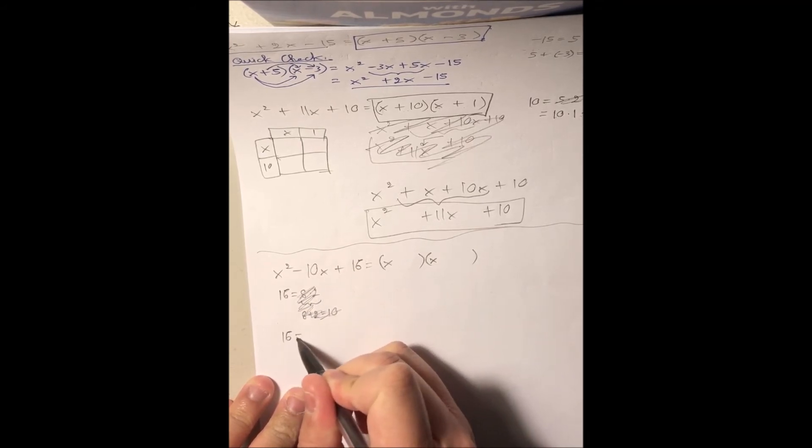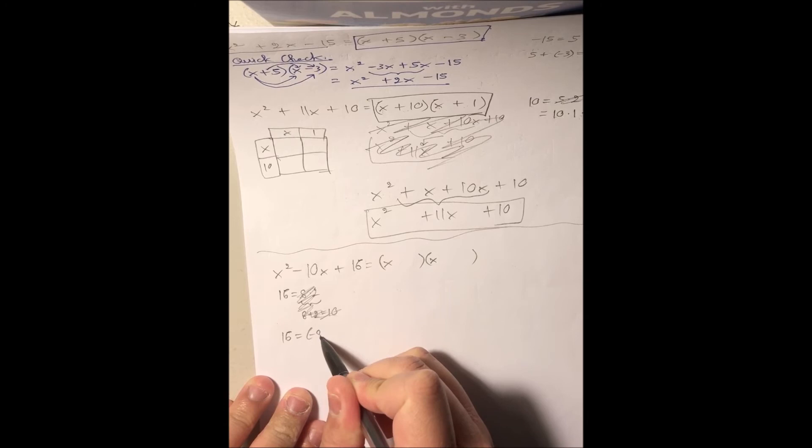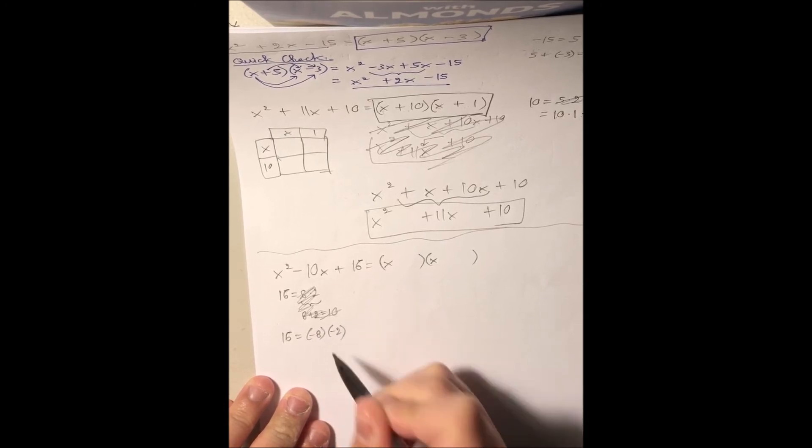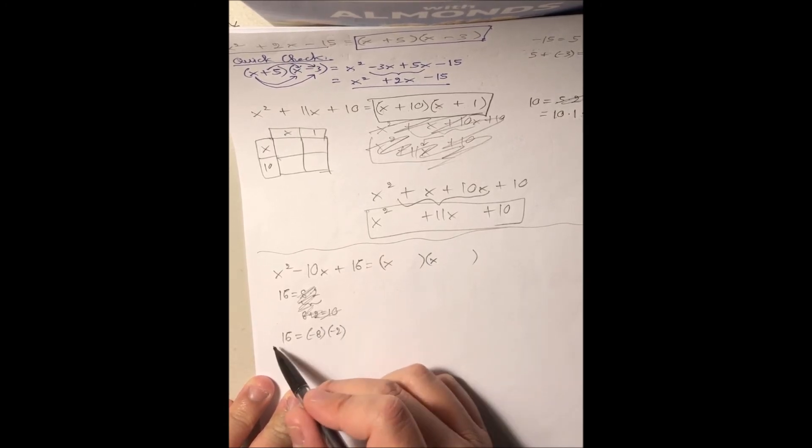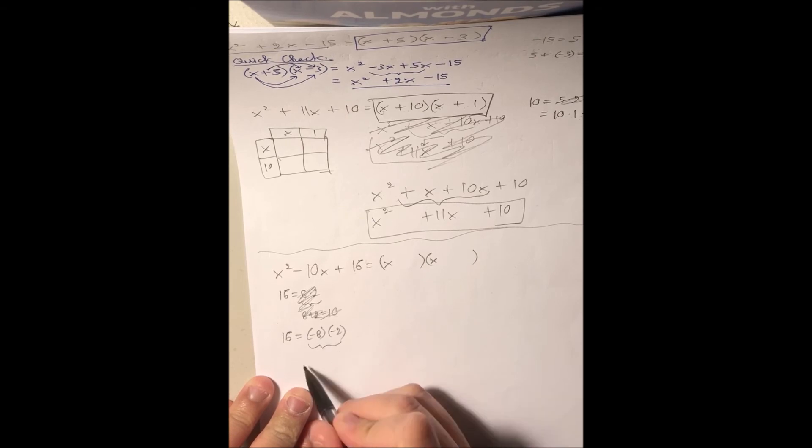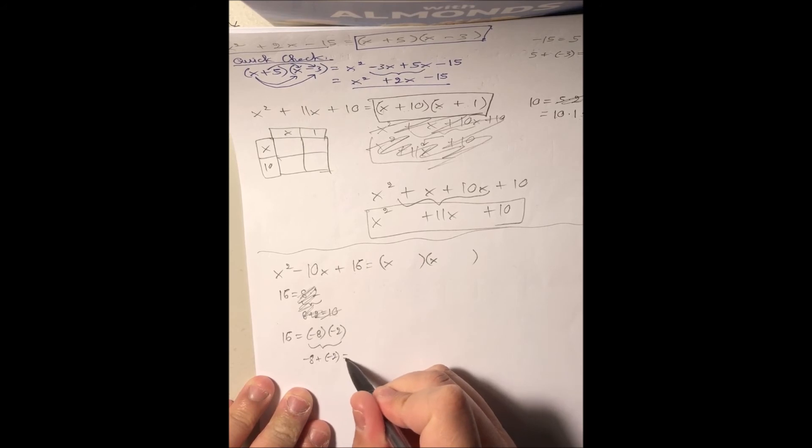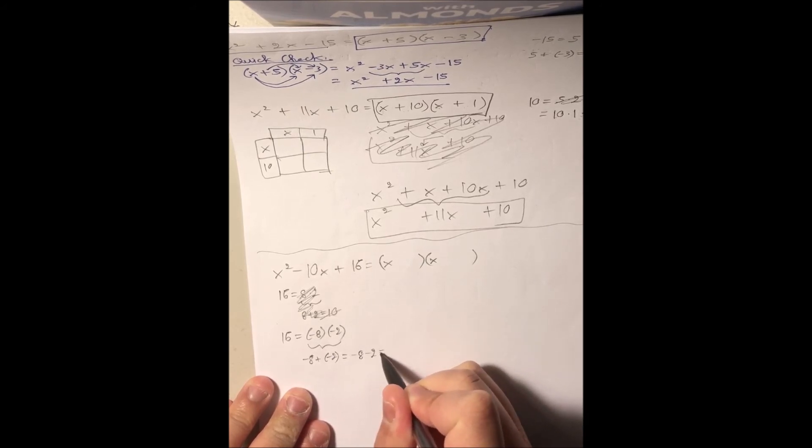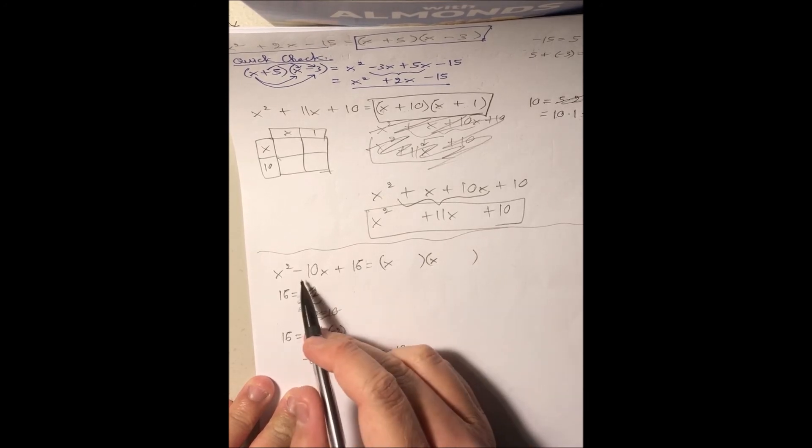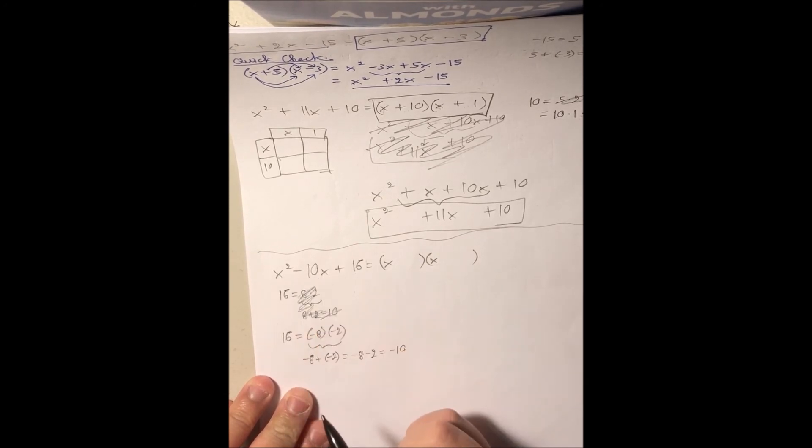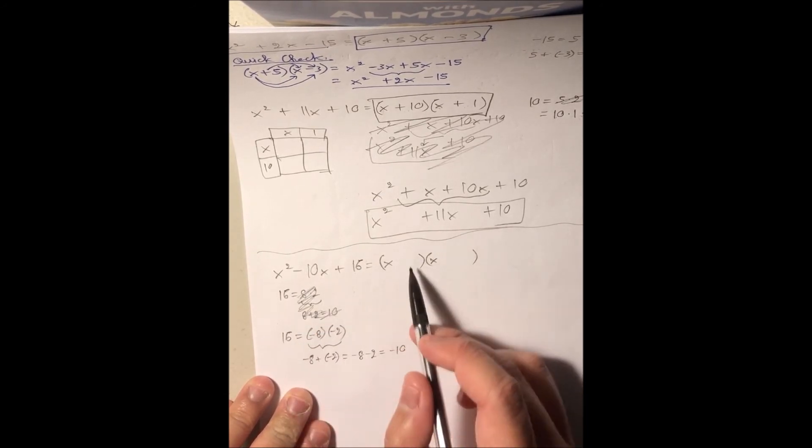What if we were to say negative 8 times negative 2? Well, negative 8 times negative 2 is positive 16, but if we were to add them together, negative 8 plus negative 2, which is the same as saying negative 8 minus 2. Hey, guess what? We got negative 10 right there. So we place these two factors in here.